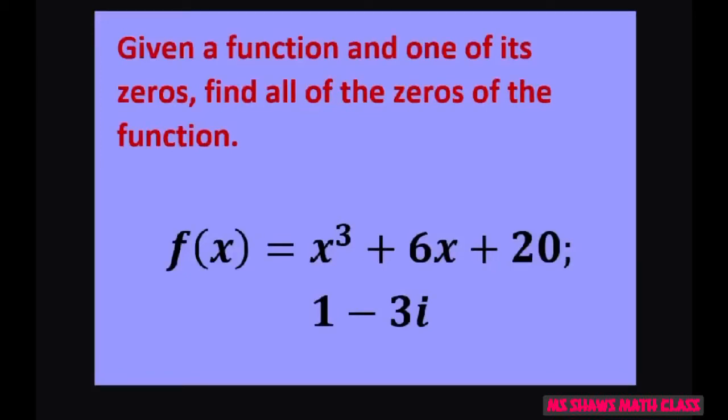Hey everyone, given a function f of x equals x cubed plus 6x plus 20, and one of its zeros, 1 minus 3i, we're going to find all the zeros of the function.